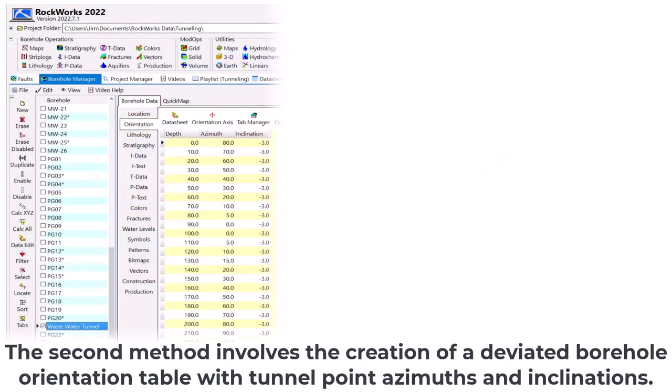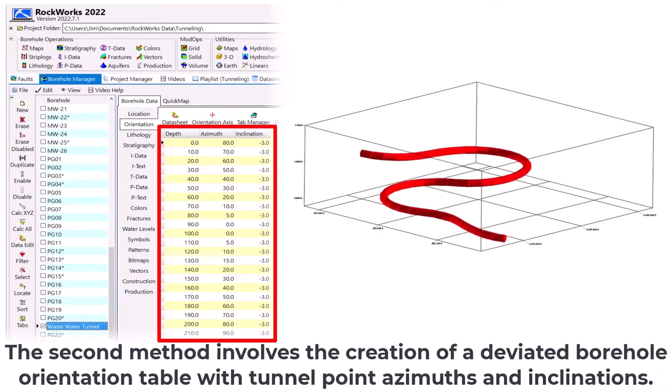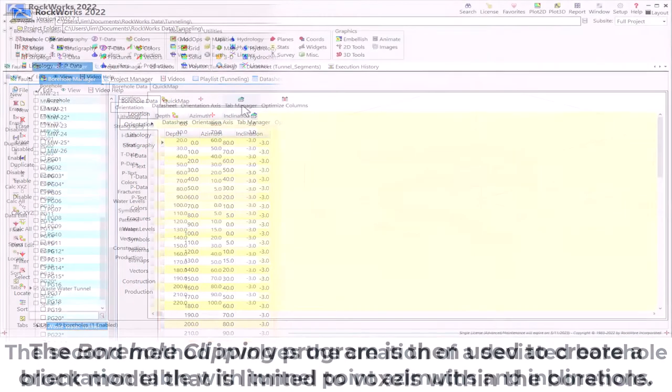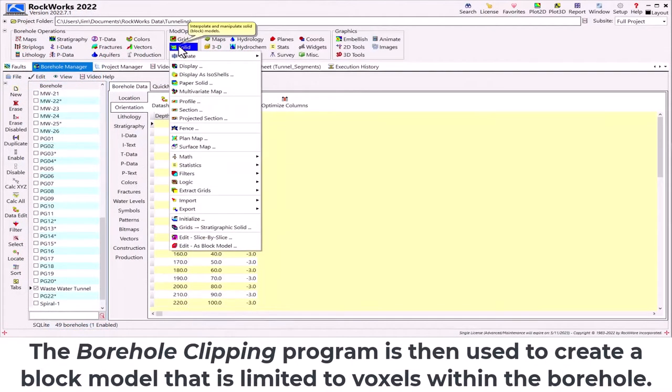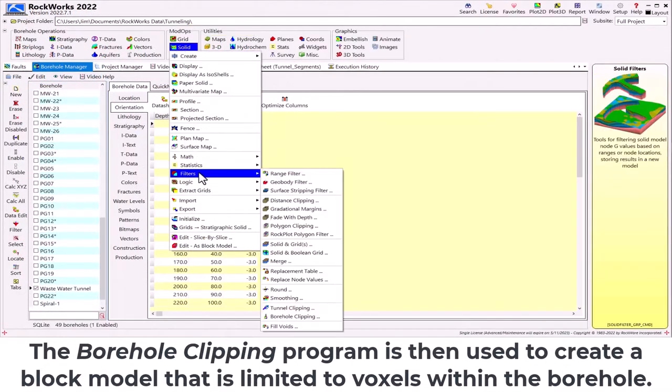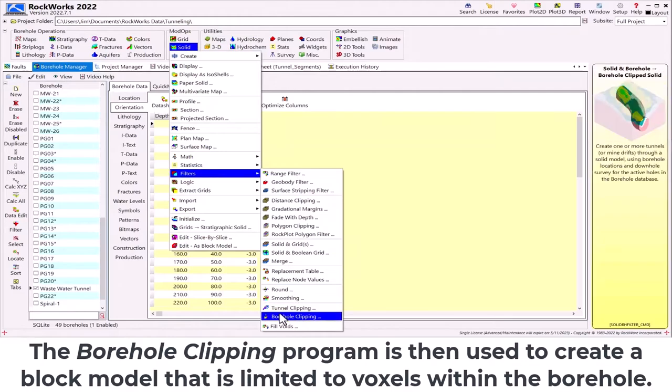The second method involves the creation of a deviated borehole orientation table with tunnel point azimuths and inclinations. The borehole clipping program is then used to create a block model that is limited to voxels within the borehole.